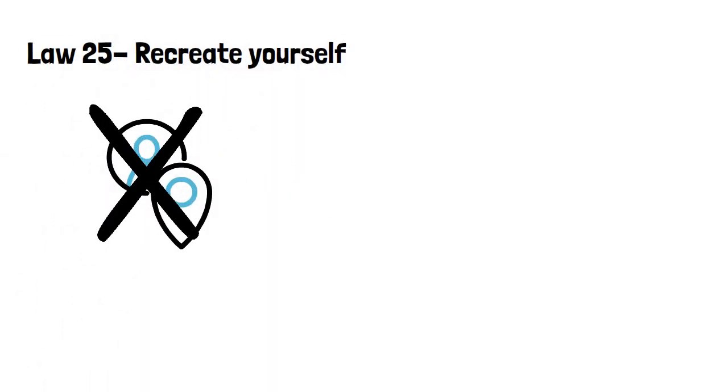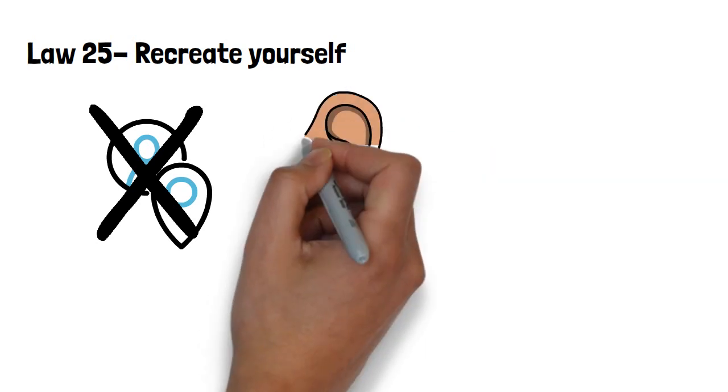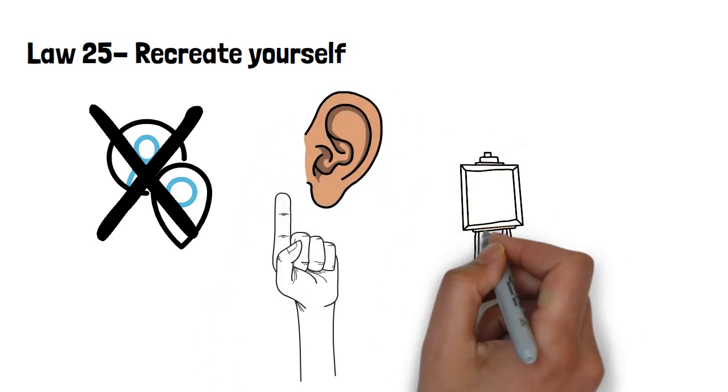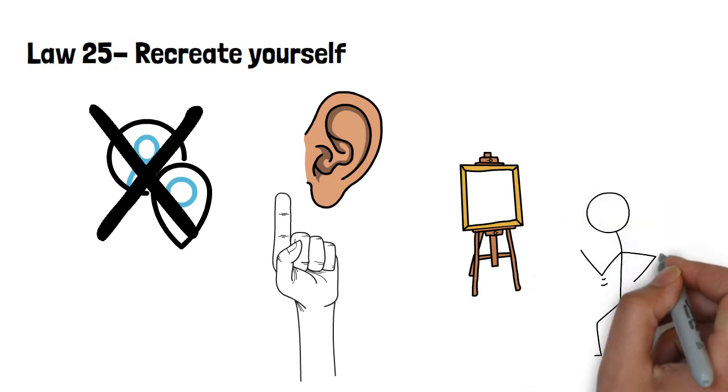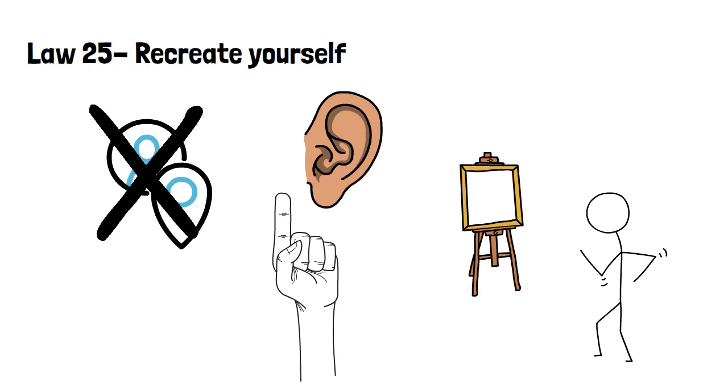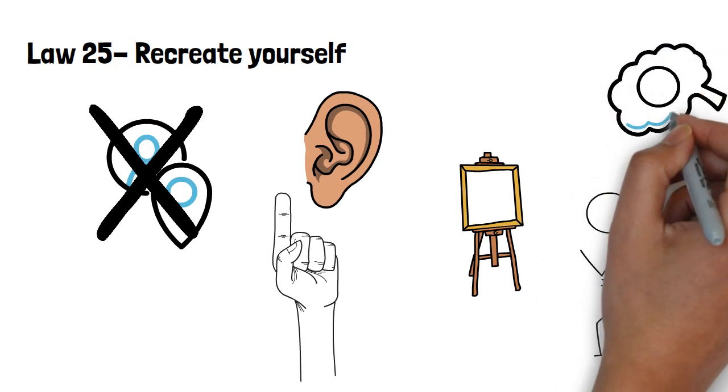Law 25, recreate yourself. Do not accept the position that society gives you. Make your own identity, one that commands attention. Master your image instead of letting others dictate it for you. Remake yourself into a figure of power as if you're molding yourself from clay. To do this, you must be self-aware and you must learn to master your emotions.